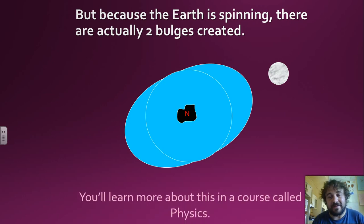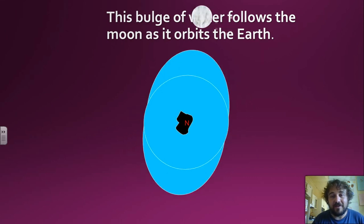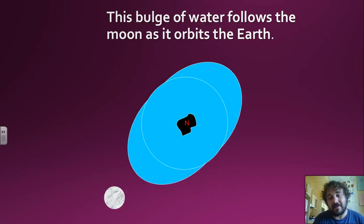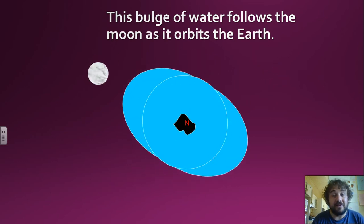Later on you'll do some physics to explain this, but not this year. Don't stress. So the bulge of the Earth, bulge of water, follows the Moon around, which is pretty cool. So as the Moon spins, the bulge goes with it. That's pretty cool, that's pretty straightforward.